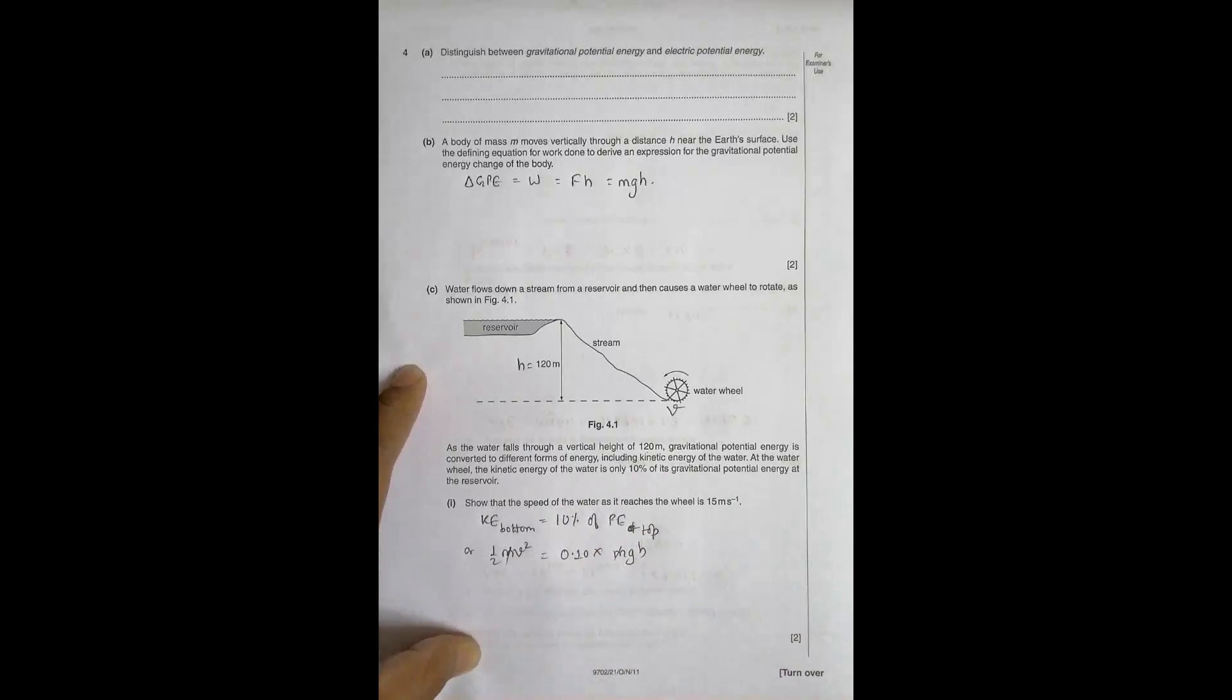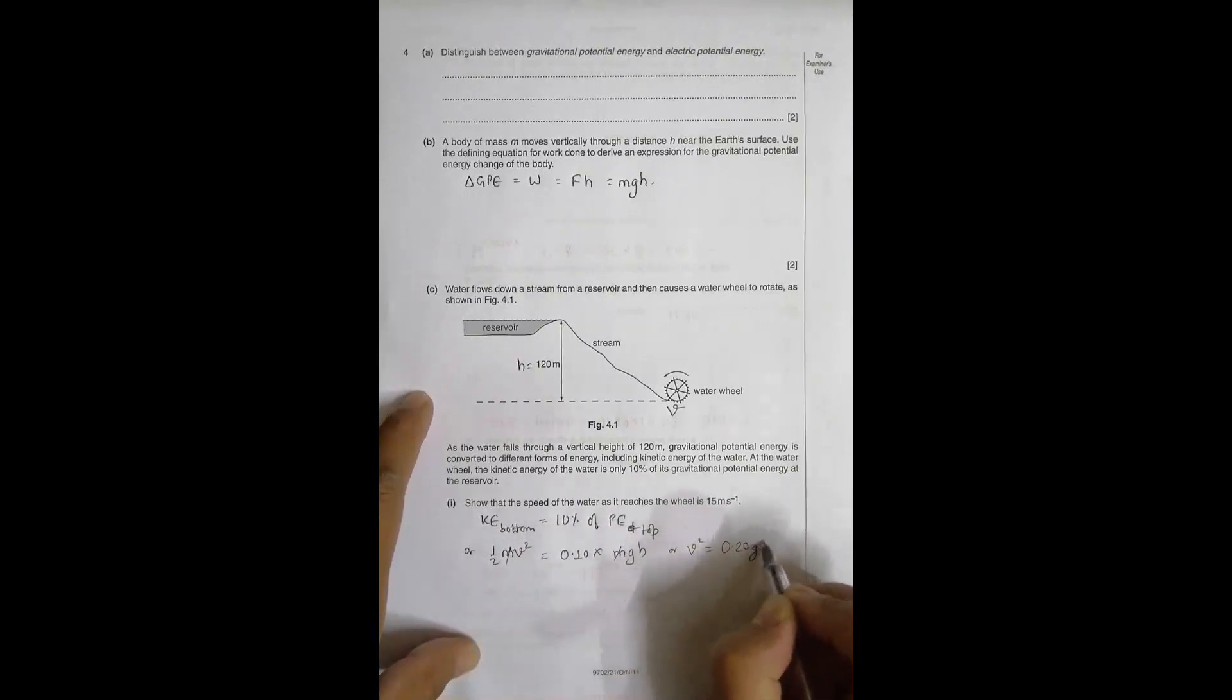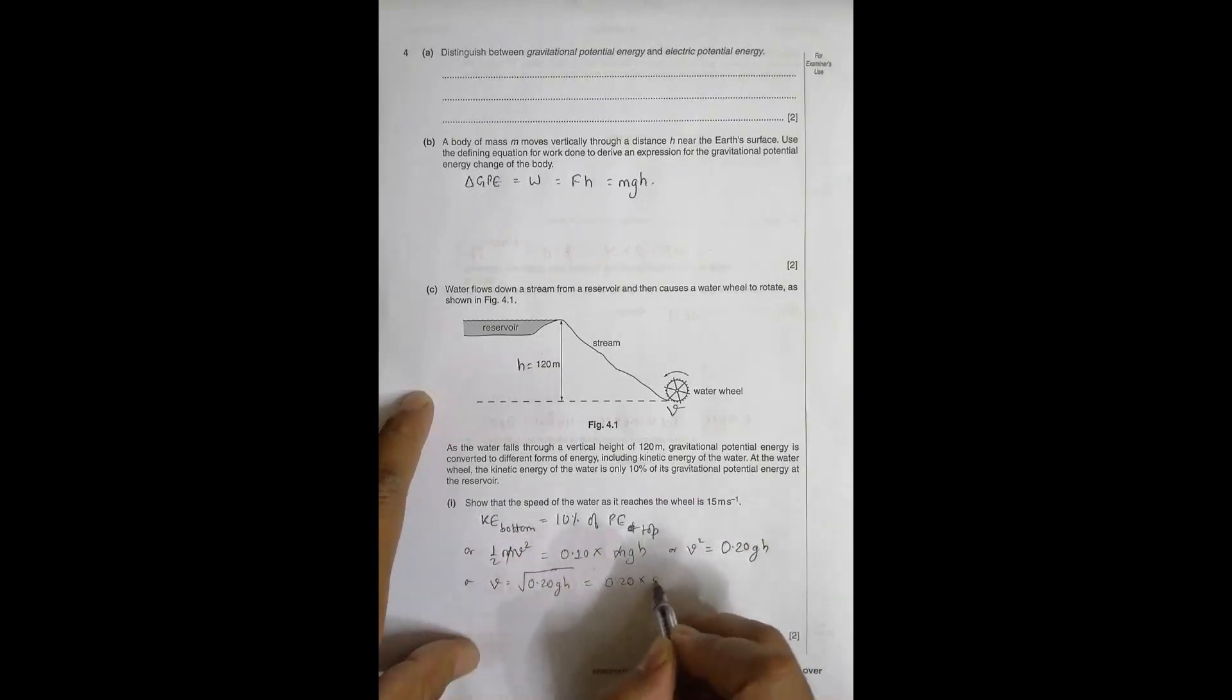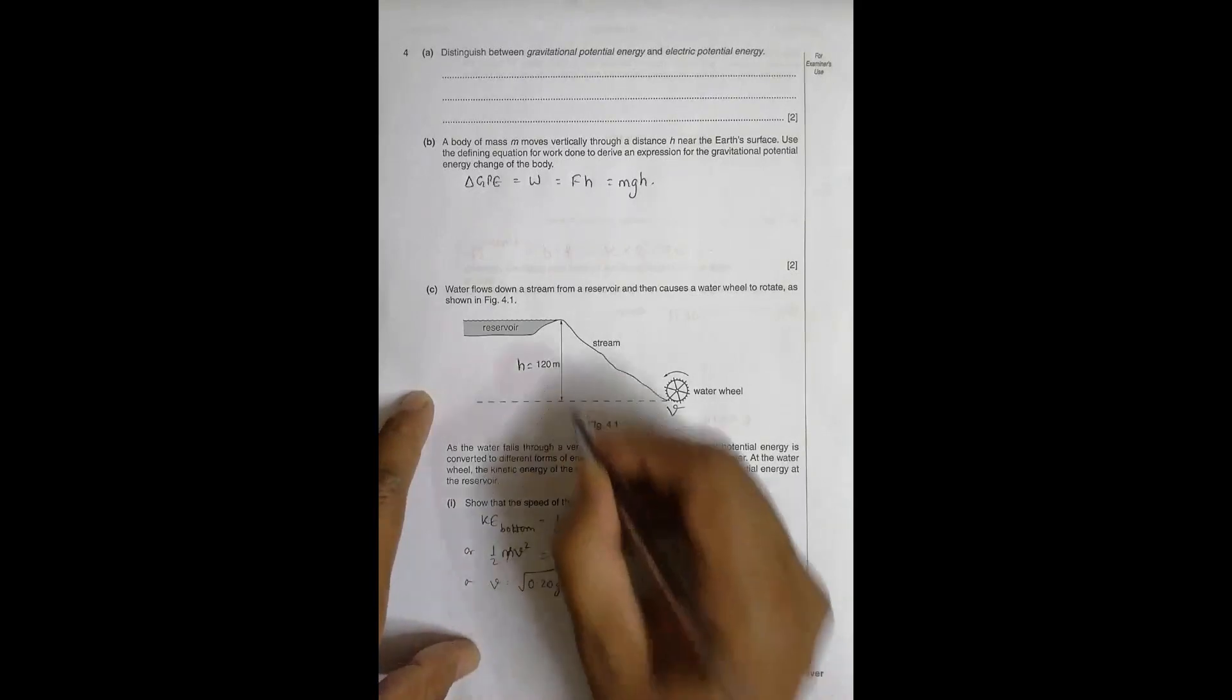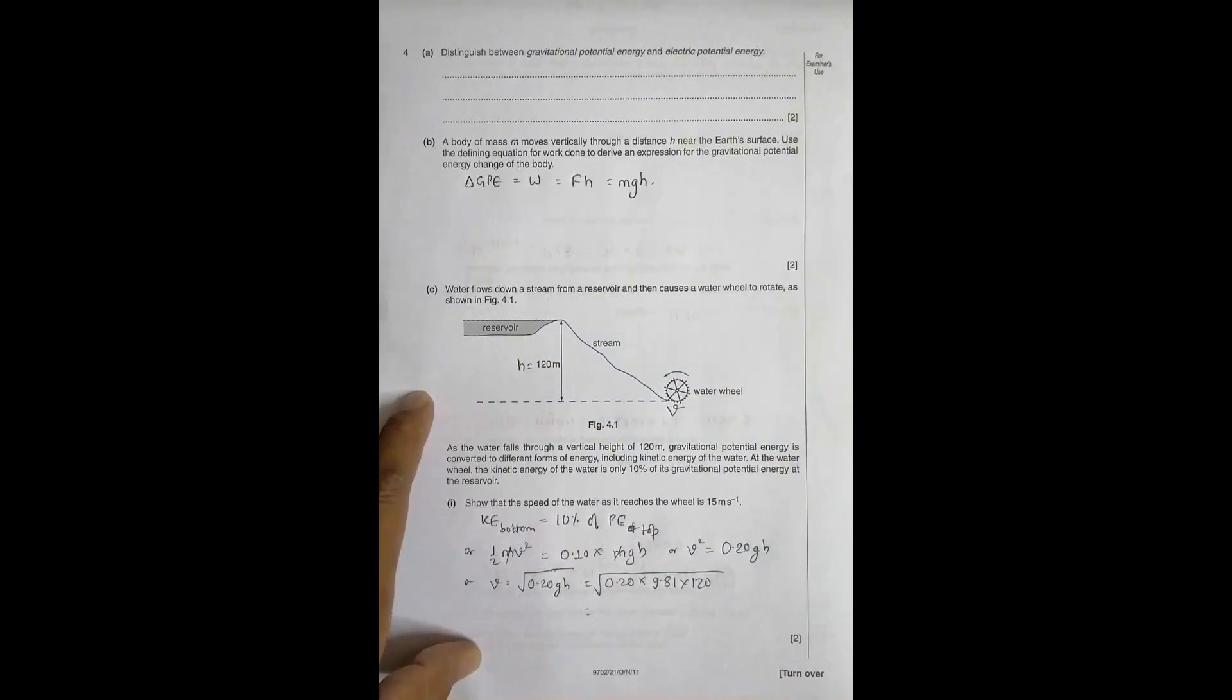So what I'll have is v square is equal to, 2 goes here, it is 0.20 gh and v is equal to root of 0.20 gh, so this will be equal to 0.20 into 9.81 into 120 equal to,